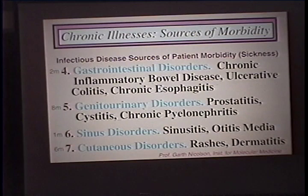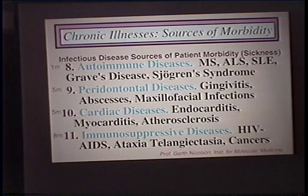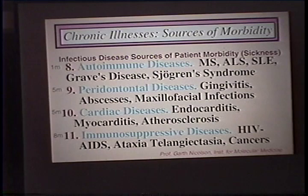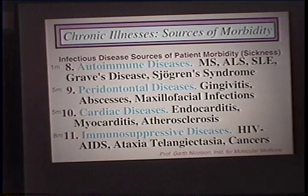Autoimmune diseases — I'm very interested in these because of the potential role for multiple infections. I think they're vitally involved in the etiologic process of things like MS, ALS, SLE, and Graves disease. Often we'll see patients diagnosed with chronic fatigue syndrome who have signs and symptoms of many autoimmune disorders — some will have rheumatoid signs, some Graves disease signs, some lupus signs. We think there's a reason for this: these chronic infections tend to set up an autoimmune disorder by their very nature, and they do have the capacity to trigger autoimmune reactions.